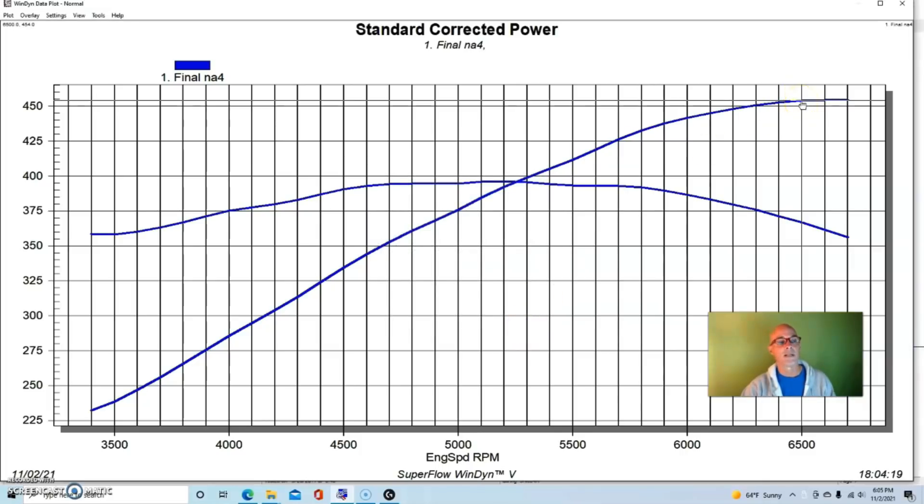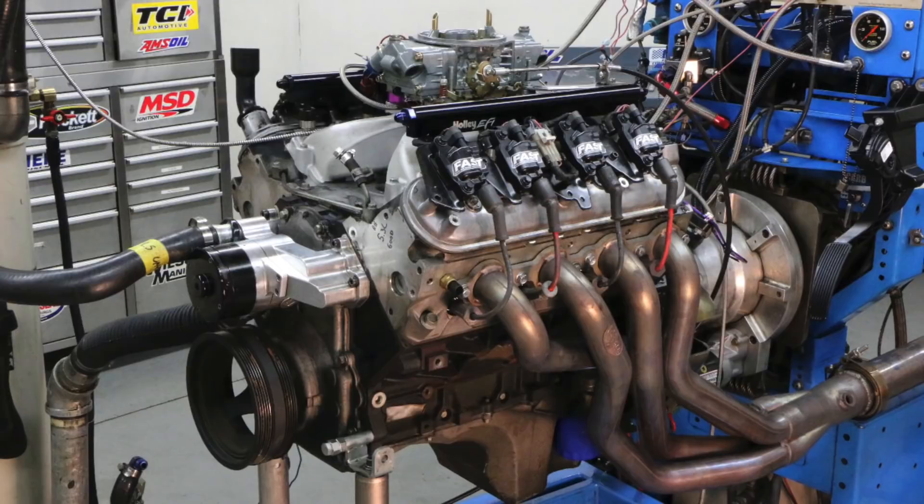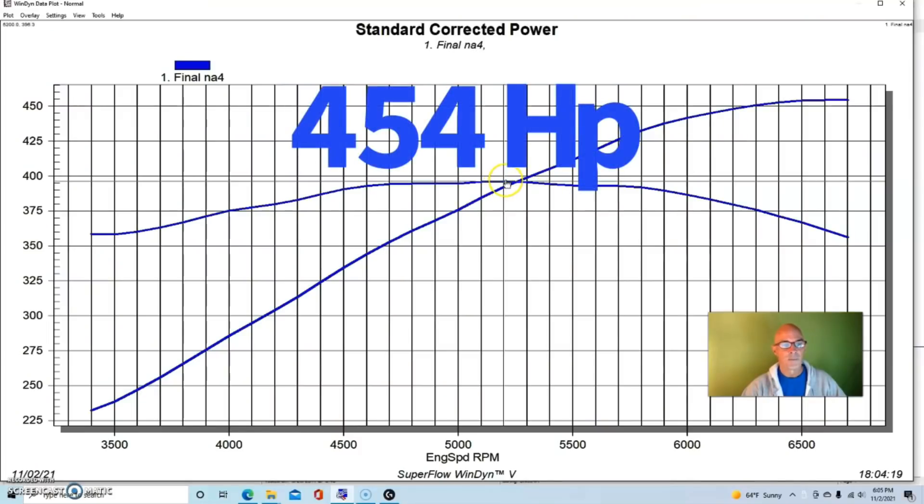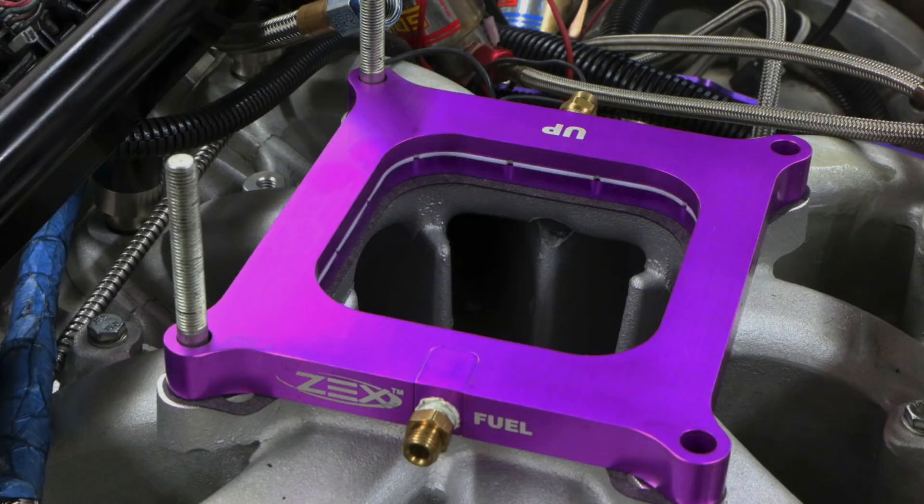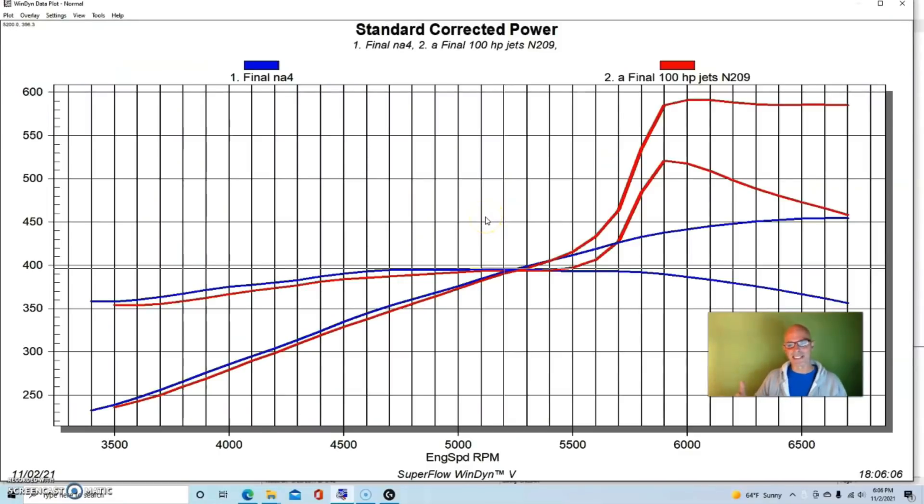First let's show you how much power this motor made naturally aspirated. Our carbureted and cammed 5.3 made 454 horsepower and 396 foot-pounds. Here's what happened after we added our Zex perimeter plate nitrous setup. It says 100 horsepower jetting but actually this was like a 52 jet which is more like 125.